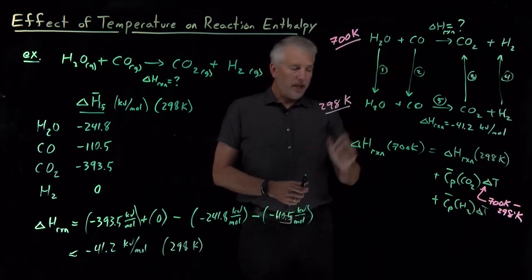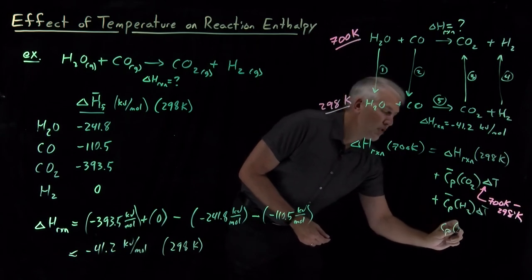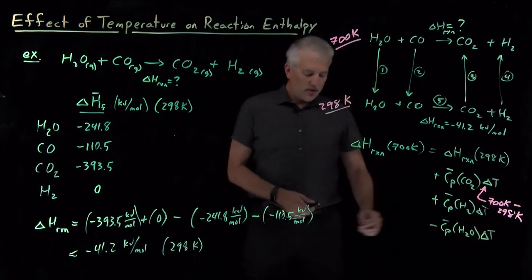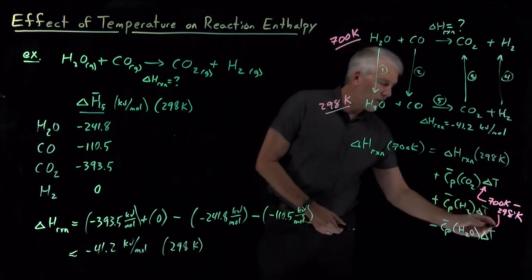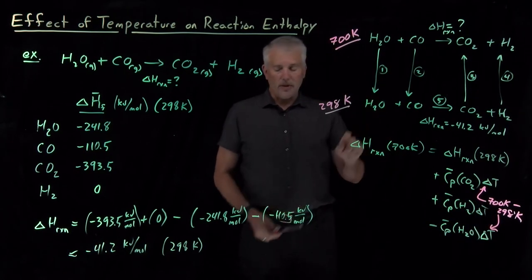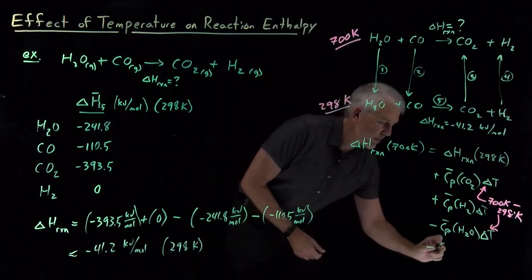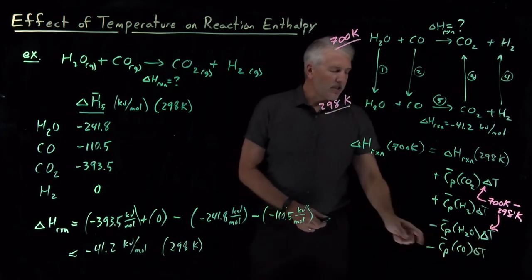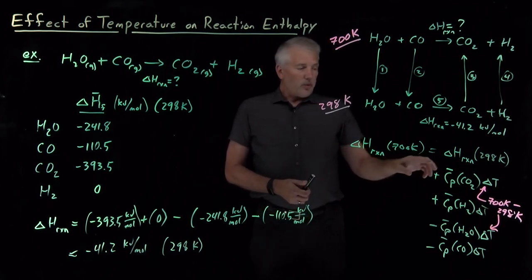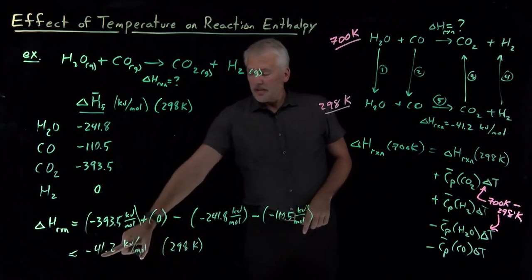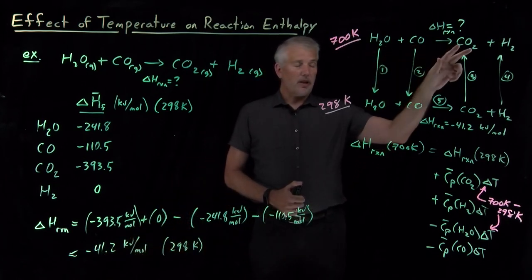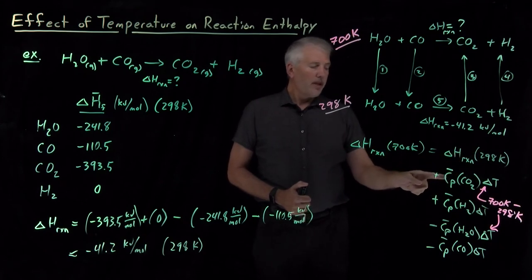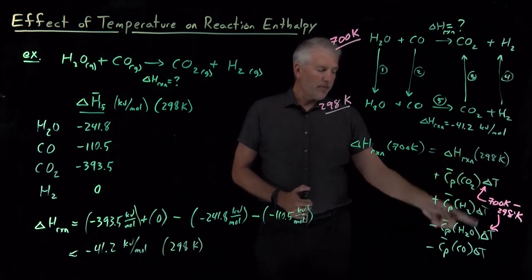For the cooling steps — steps one and two — I'm cooling the reactants down. Those are written as the heat capacity of H₂O times delta T with a negative sign, reflecting that I'm cooling rather than heating, and the heat capacity of carbon monoxide times delta T with the same negative sign. Combined with the known enthalpy of reaction at 298 K, we can compute the enthalpy of reaction at any other temperature.